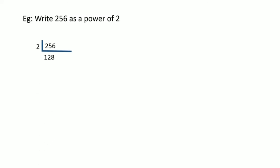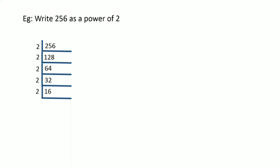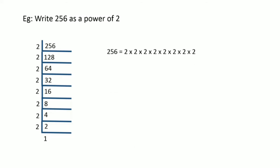Moving on to another example: 256 as a power of 2. We continuously divide 256 by 2 until we obtain 1. So 256 divided by 2 is 128, that by 2 is 64, that by 2 is 32, again by 2 is 16, once again by 2 gives you 8, then 4, then 2, and finally 1. You can see along the divisor column 2 has been written 8 times, so 256 is equal to 2 to the power 8.